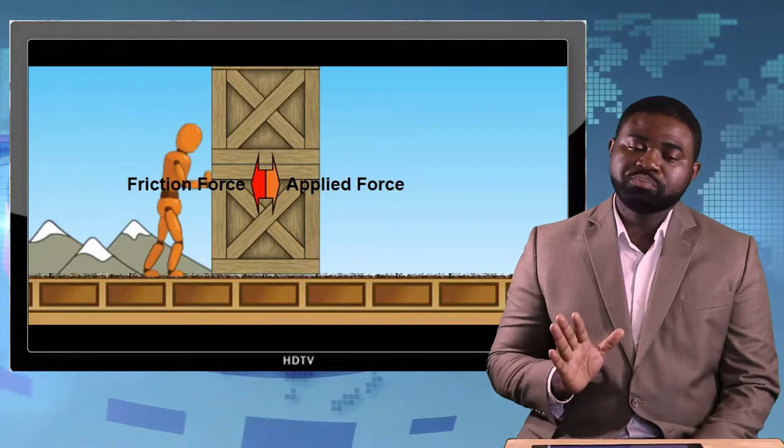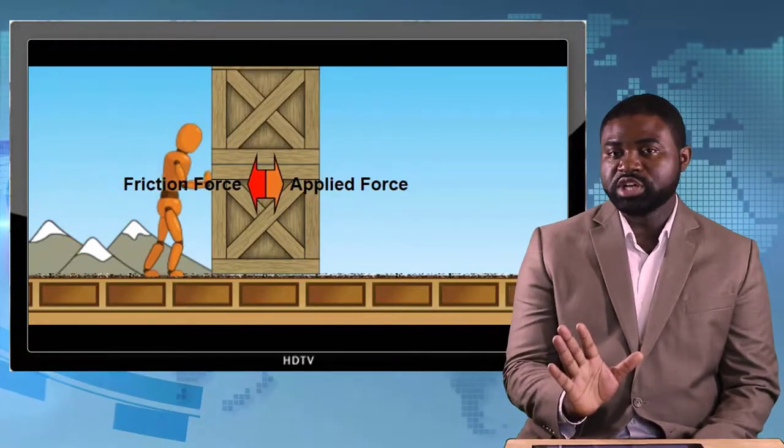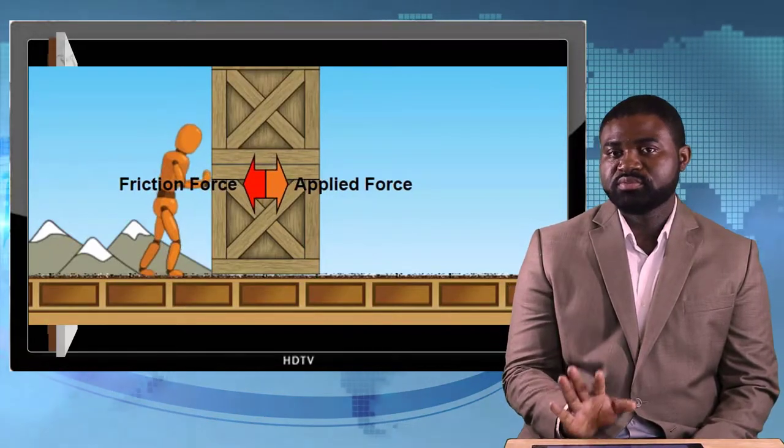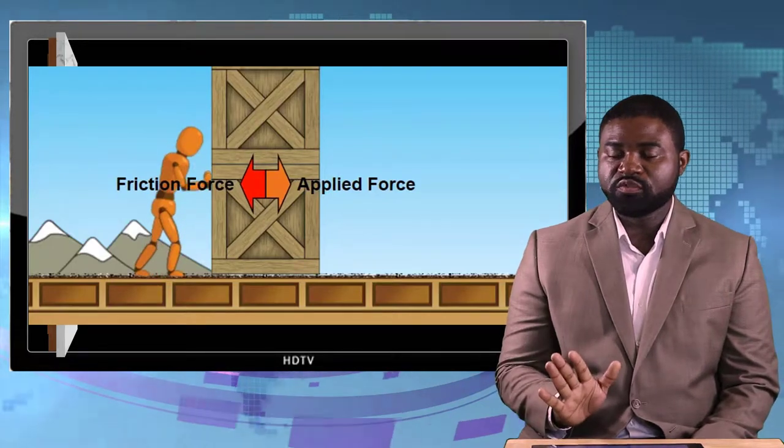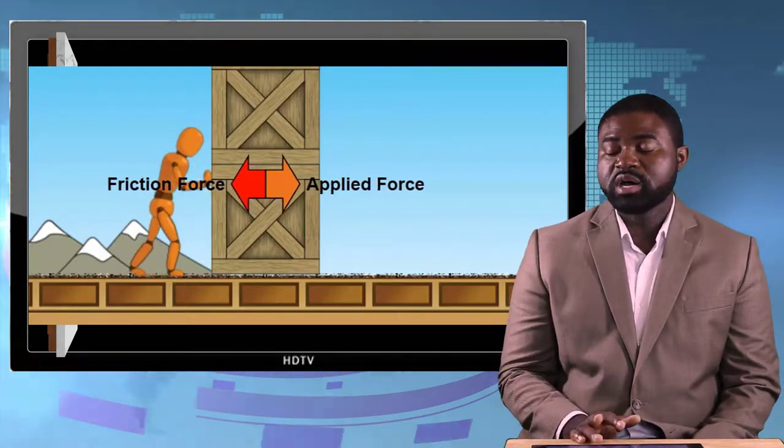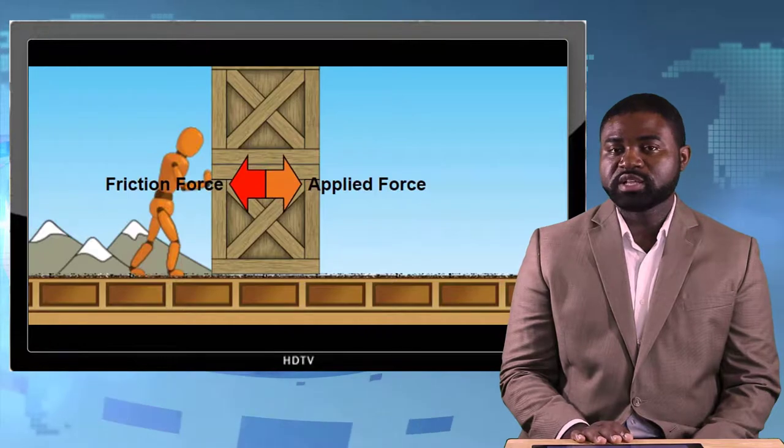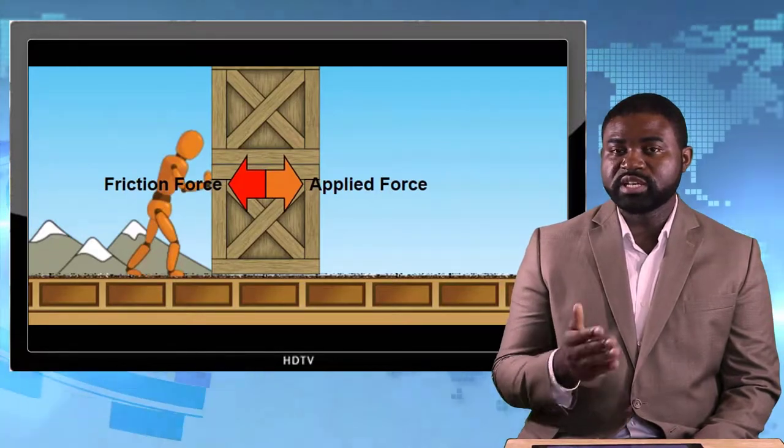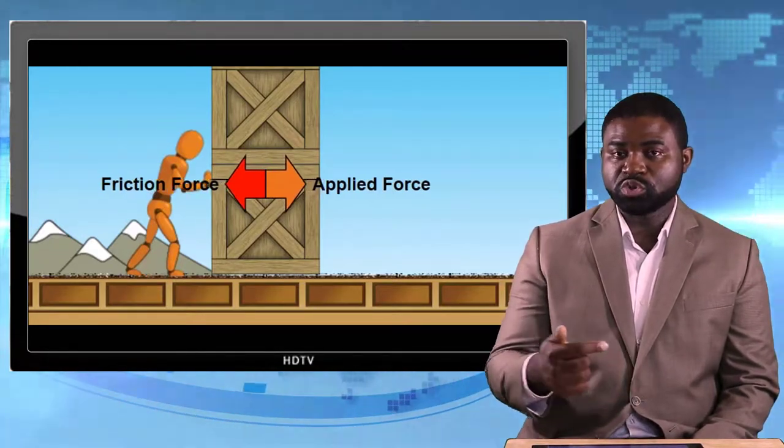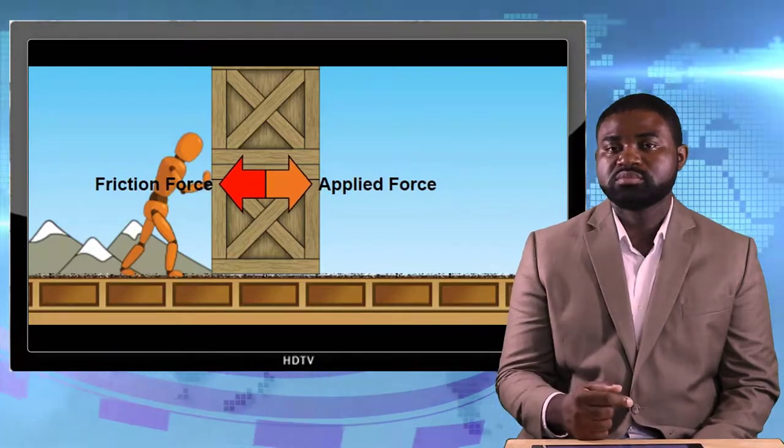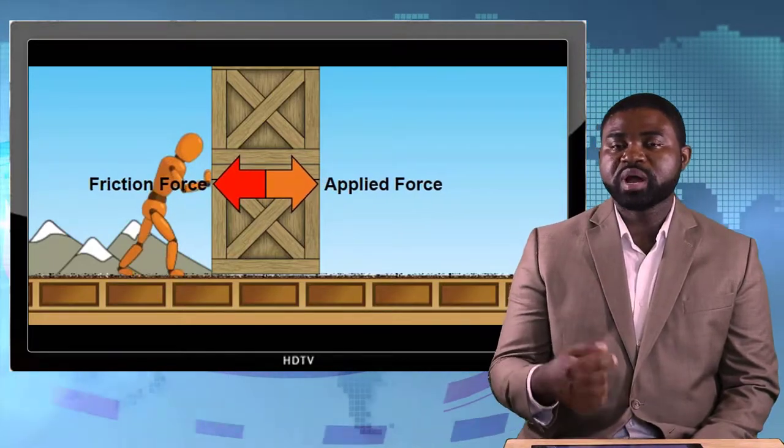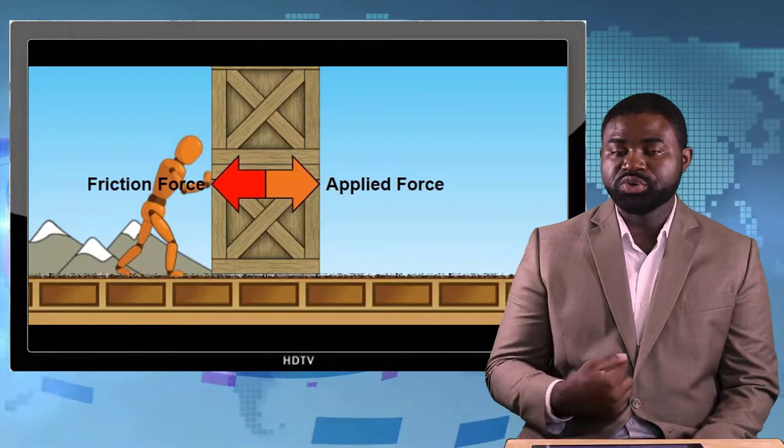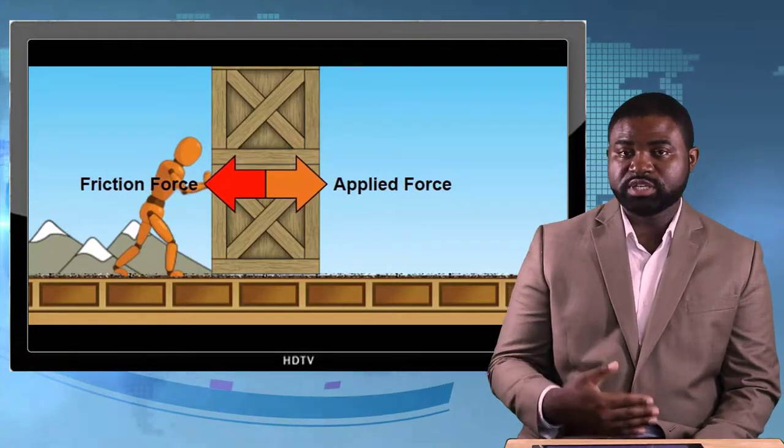If you just push the box initially, it wouldn't move, but you are exerting a force forward and it wouldn't move. The fact that it doesn't move forward is an indication that there is a force opposing you backwards. That backward force that is opposing you is what we call static friction.